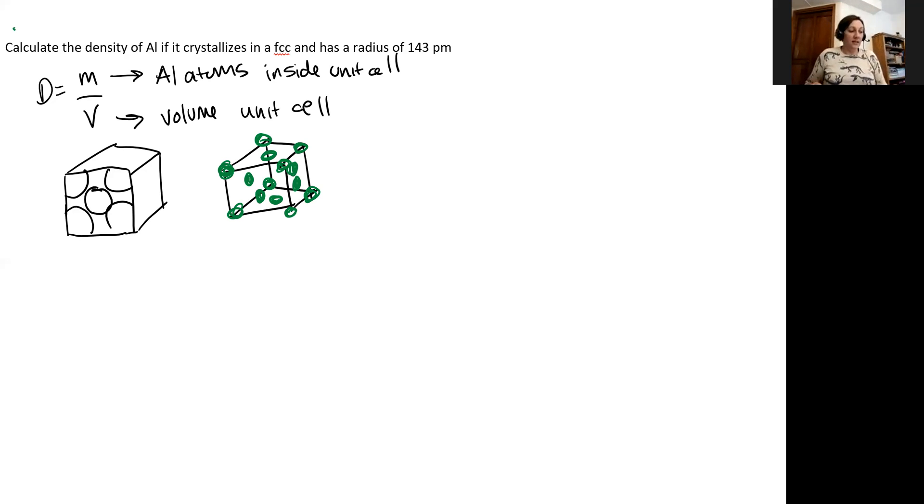So let's start with figuring out how many of these aluminum atoms we have inside of our unit cell. So on my unit cell, on each of my corners, right, those will each be an eighth of an atom. And on each face, it'll be half of an atom because it'll be shared with two unit cells, whereas each of those corners is shared with eight unit cells.